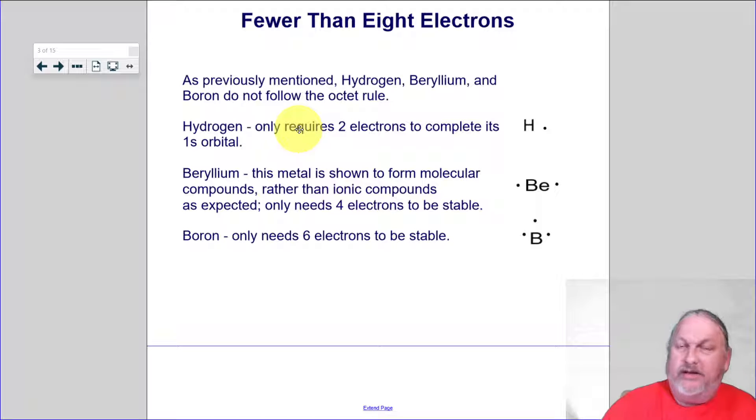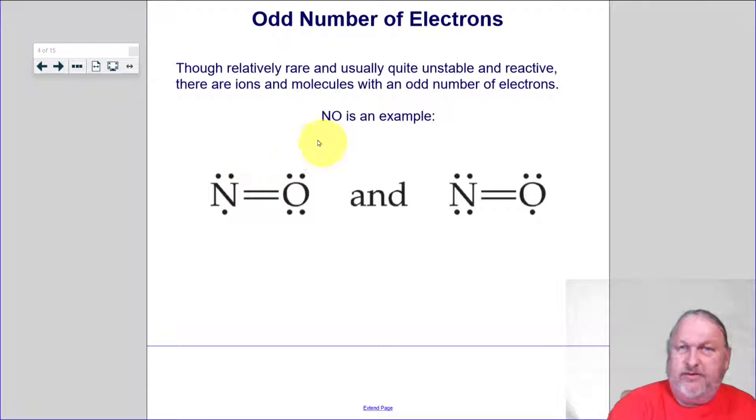Boron only needs six electrons to be stable. Another little weird metal. So there's also some other weird ones out there. You're not going to encounter these very often. These are rare. They're very unstable, very reactive. They go boom.